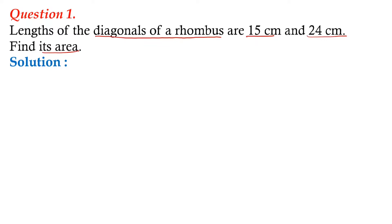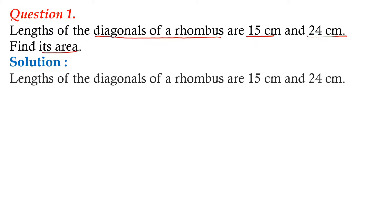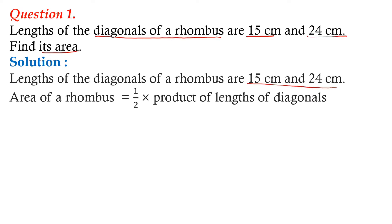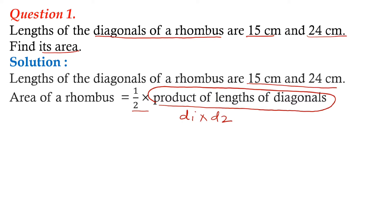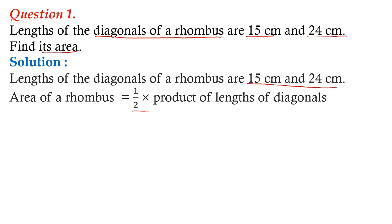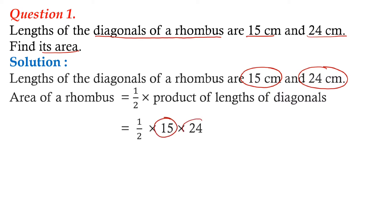Let's see the solution. The lengths of the diagonals are 15 cm and 24 cm. The formula for area of rhombus is one upon two into product of length of diagonals, that is one upon two into d1 into d2. We substitute: one upon two into 15 into 24. We cancel 24 by 2 to get 12, giving us 15 into 12, which equals 180 square centimeters. So the area of the rhombus is 180 square centimeters.